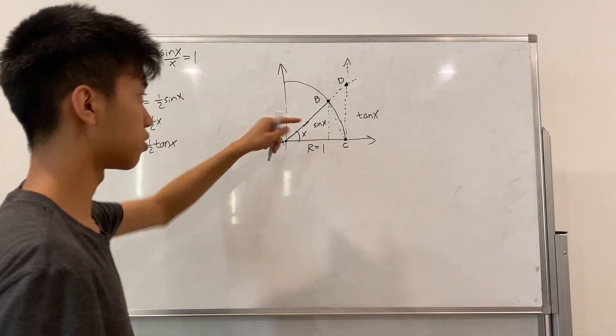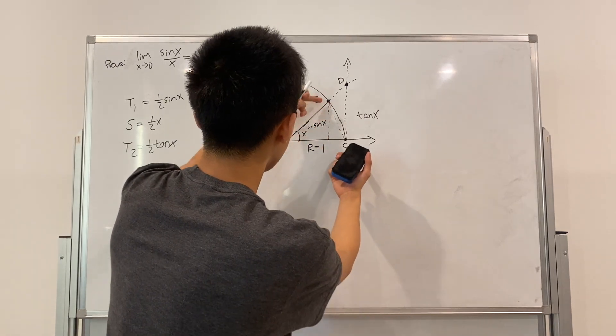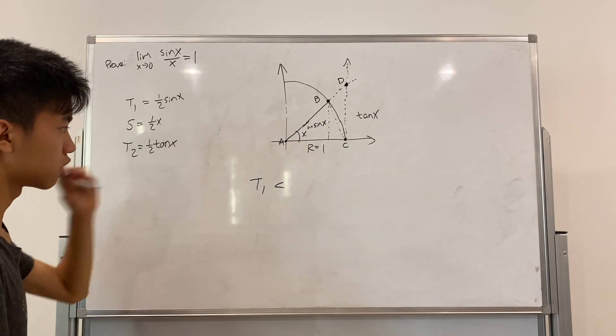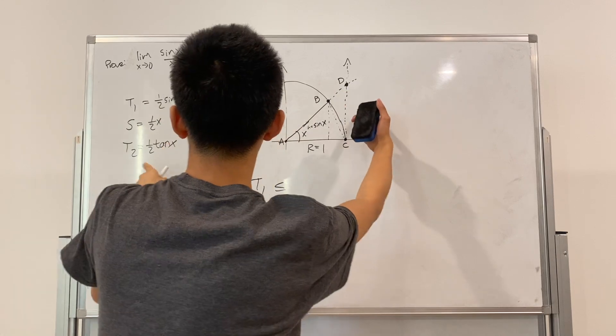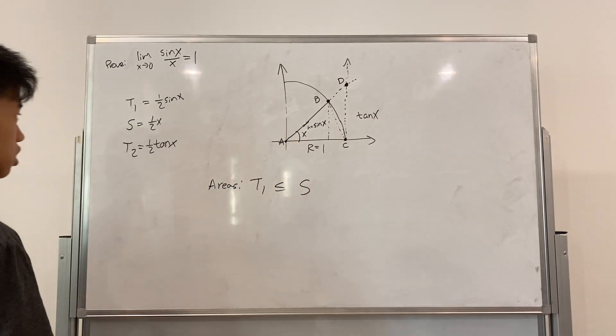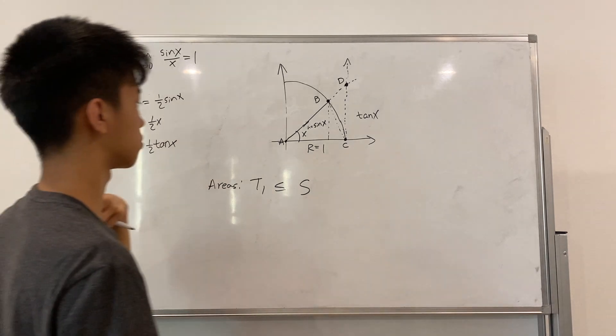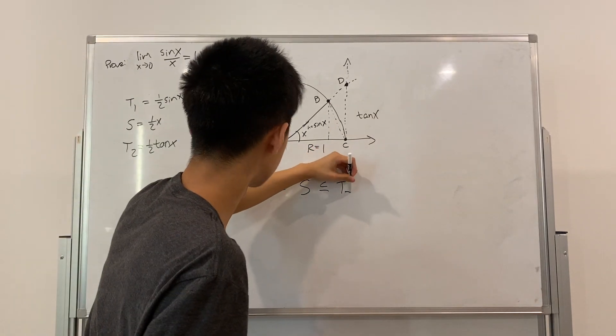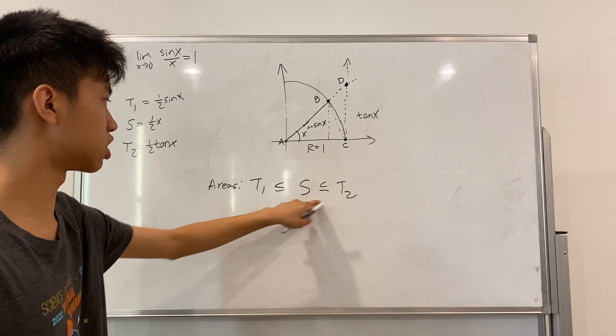So, now if we just look at this for a second. We know that this triangle ABC is the smallest one of these three shapes. So, we can say T1 is less than or equal to, now, S, the sector is in between T1 and T2. So, we can put S here. These are all areas. Just note, since T1, S, and T2 are all quantities of area. And now, the biggest one of them, this ACD triangle, is T2. So, you know, T1 is less than S, less than T2, or equal. But, in this case, it's just less than.